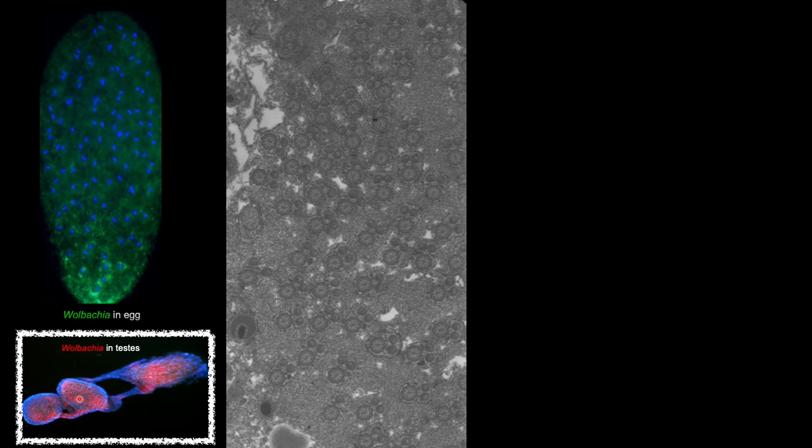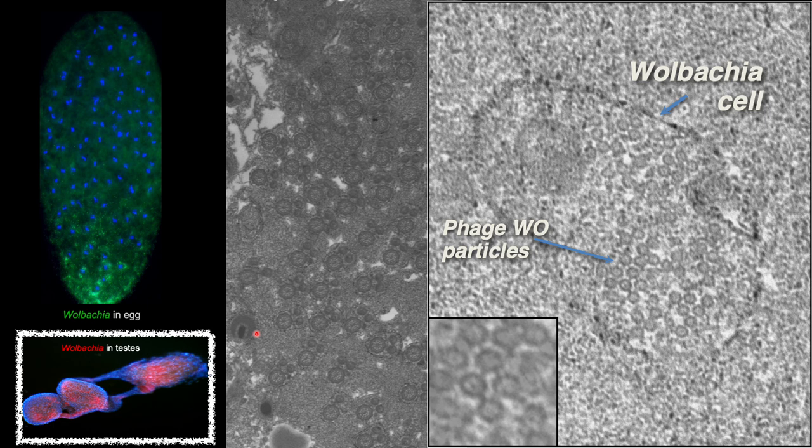What you're looking at here is an egg — in blue is stained the wasp DNA, and in green is the Wolbachia endosymbiont that's vertically inherited from the mother's ovaries to the developing egg each generation. So it's passed on maternally, just like mitochondria are. These Wolbachia bacteria occur in 50% of the world's arthropod species — they're very common, so Nasonia is just one of many. In the testes, you'll see Wolbachia stained in red and the wasp DNA in blue. These are reproductive symbionts occurring in the reproductive tissues.